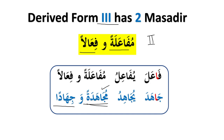Sometimes one مصدر is used and sometimes the other in the Quran. For example: نادى يُنادي — its two مصادر are مُناداةً ونِداءً, and نداء is more commonly used in the Quran. So whenever you see a word on the pattern of فِعال or فِعالٌ, that means it is also a مصدر of Form 3.